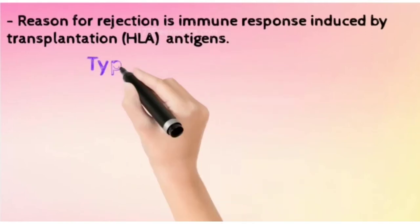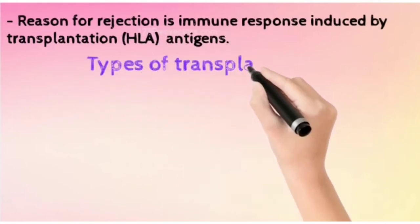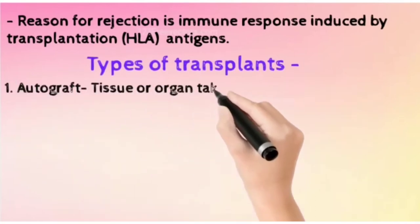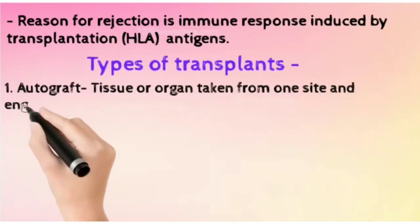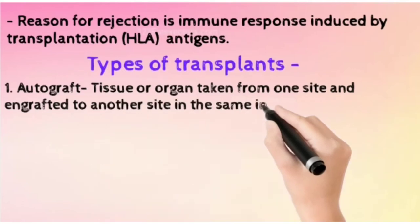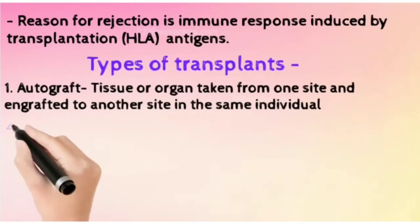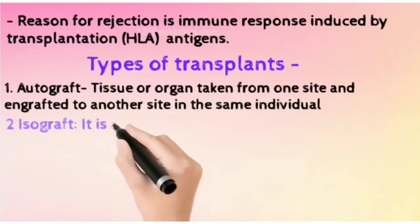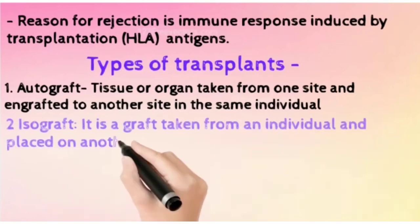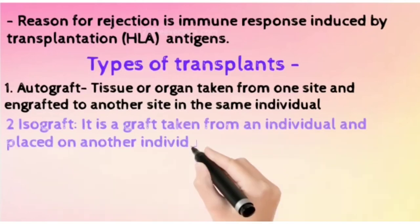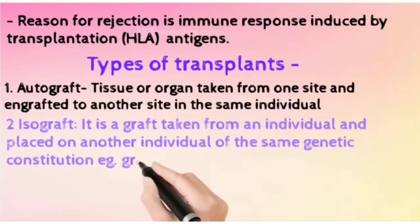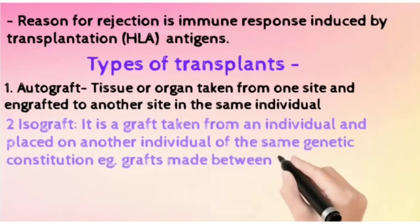What are the types of transplant? The first type is autograft — tissue or organ taken from one site and engrafted to another site in the same individual. Then isograft, which is taken from an individual and placed on another individual of the same genetic constitution, for example, grafts made between identical twins.